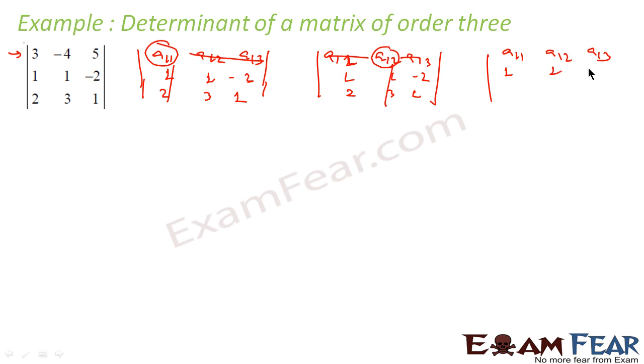So this becomes a 1 1, that is 3 here. 3 into minus 1 to the power a 1 1, that is 1 plus 1, correct, into this matrix which I got: 1, minus 2, 3, 1. Now a 1 2, that is minus 4. Minus 4 into minus 1 to the power a 1 2, 1 plus 2.